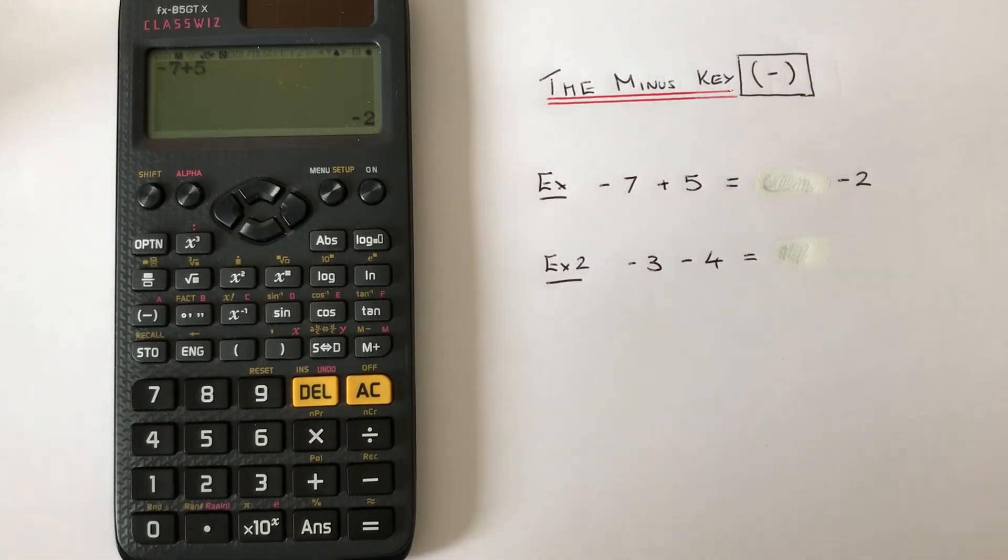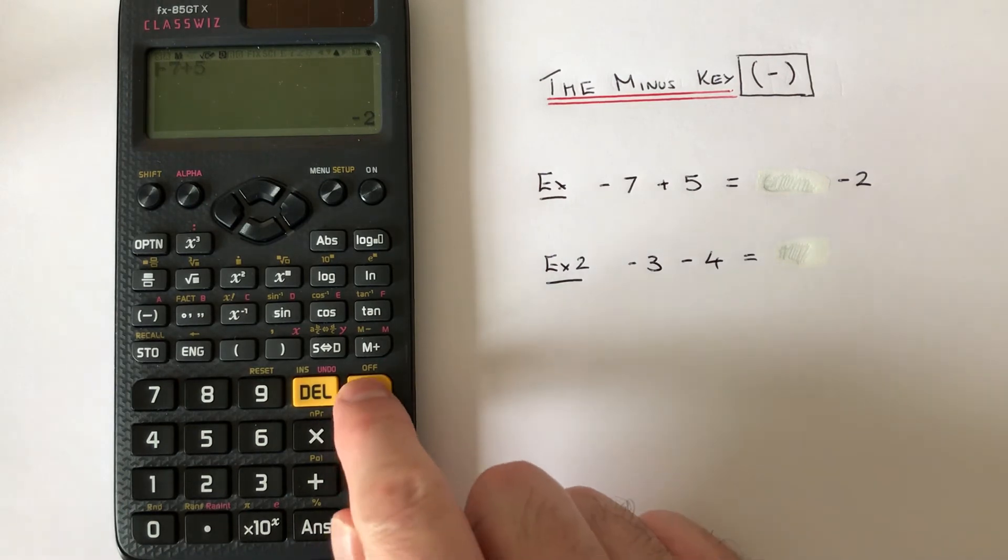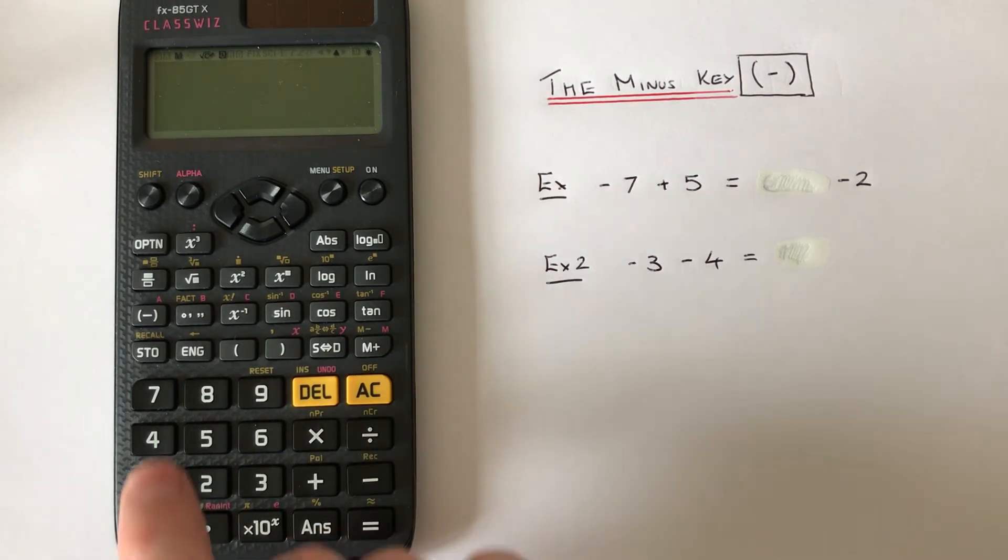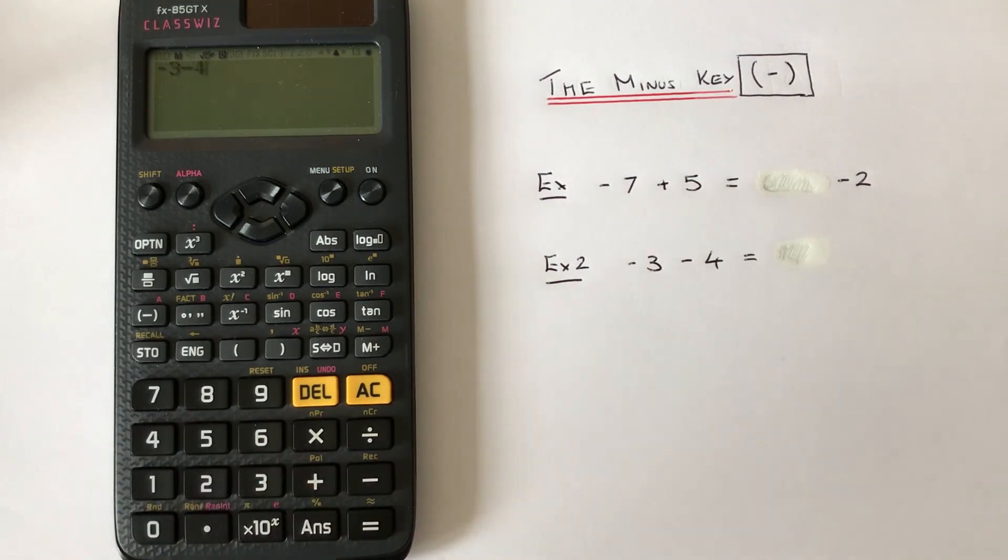Let's use the minus key again for the second example. This time we've got negative 3, so minus 3, and we take away 4, and we get an answer of minus 7. That's how you use your minus key.